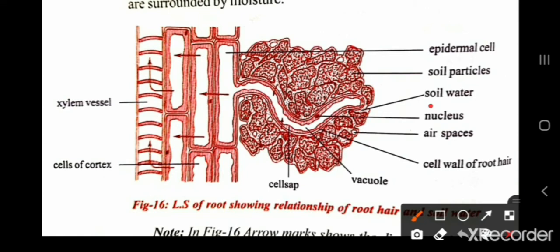The root hairs grow out into the spaces between the soil particles so that the hairs are surrounded by moisture. You can see soil water here and this water is available to the root hair. The soil water is an extremely dilute solution of salts. The soil water concentration is more dilute than that of the cell sap in the root hair.